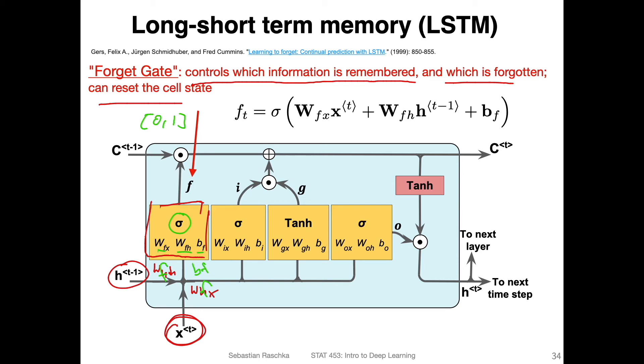If the output is zero, for instance, and there's a multiplication here, element-wise multiplication, we can essentially erase the previous cell state. At this time step, the network has the option to forget the cell state, not including any information from the previous time step, or it could learn a one so it could fully use information from the previous time step. This is the forget gate, controlling which information is removed and which is forgotten.